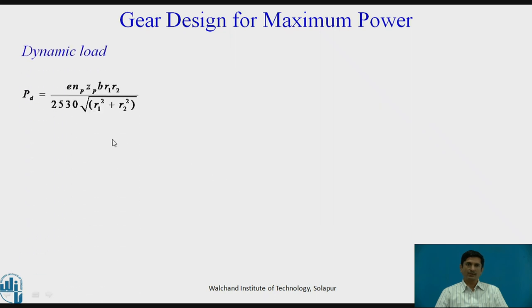Now the dynamic load. We know that by the Spot's equation, PD equals ENP ZP BR1 R2 divided by 2530 square root of R1 square plus R2 square if the pair of gear is steel material. If we check this equation, E, ZP BR1 R2, 2530, this square root term, all contributes to a constant C1. Variable is NP. Therefore, PD equals C1 NP.